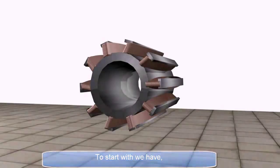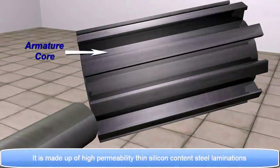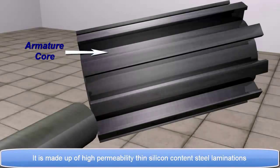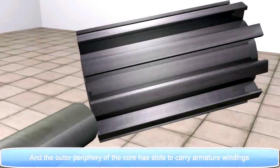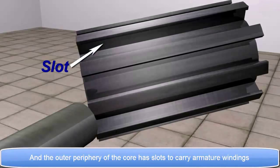To start with we have Armature Core. It is made up of high permeability thin silicon content steel laminations. And the outer periphery of the core has slots to carry armature windings.